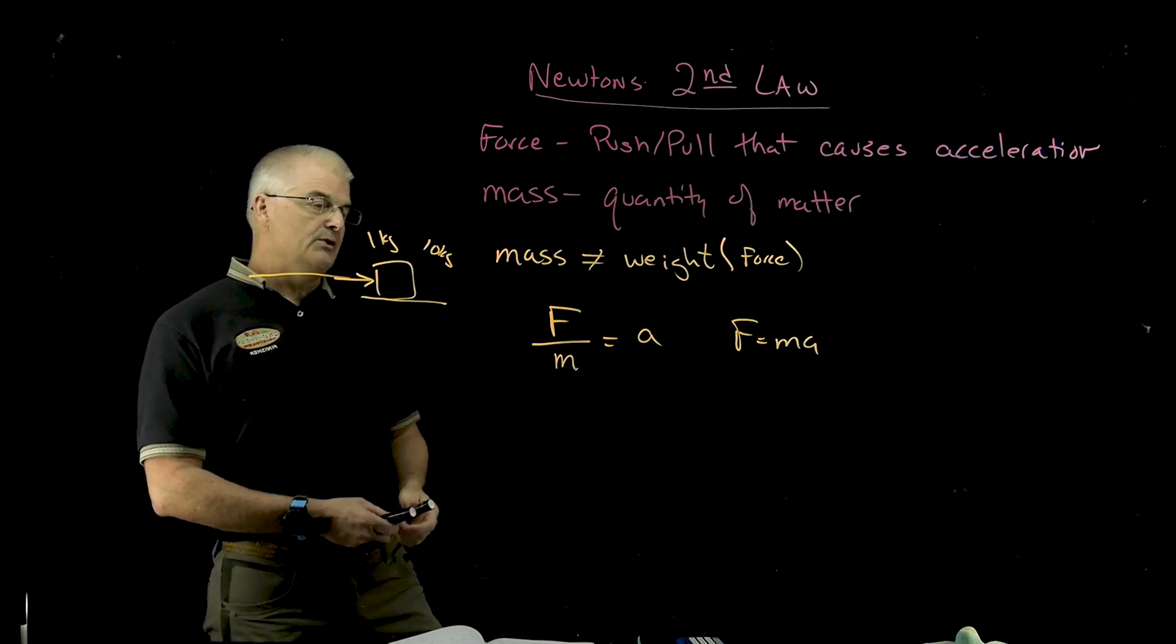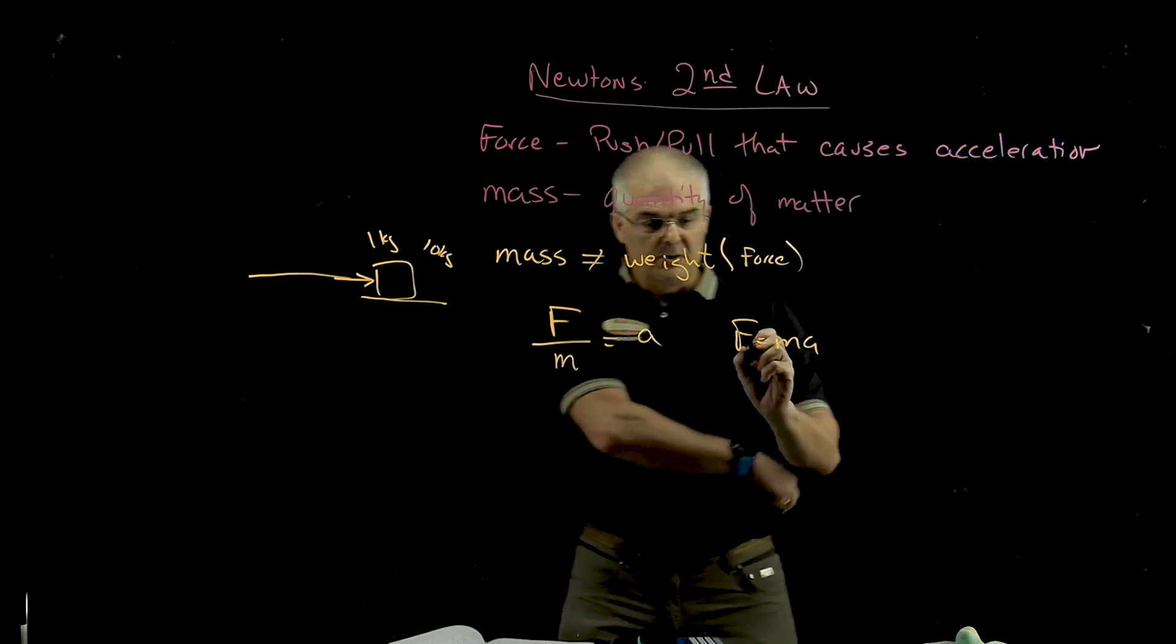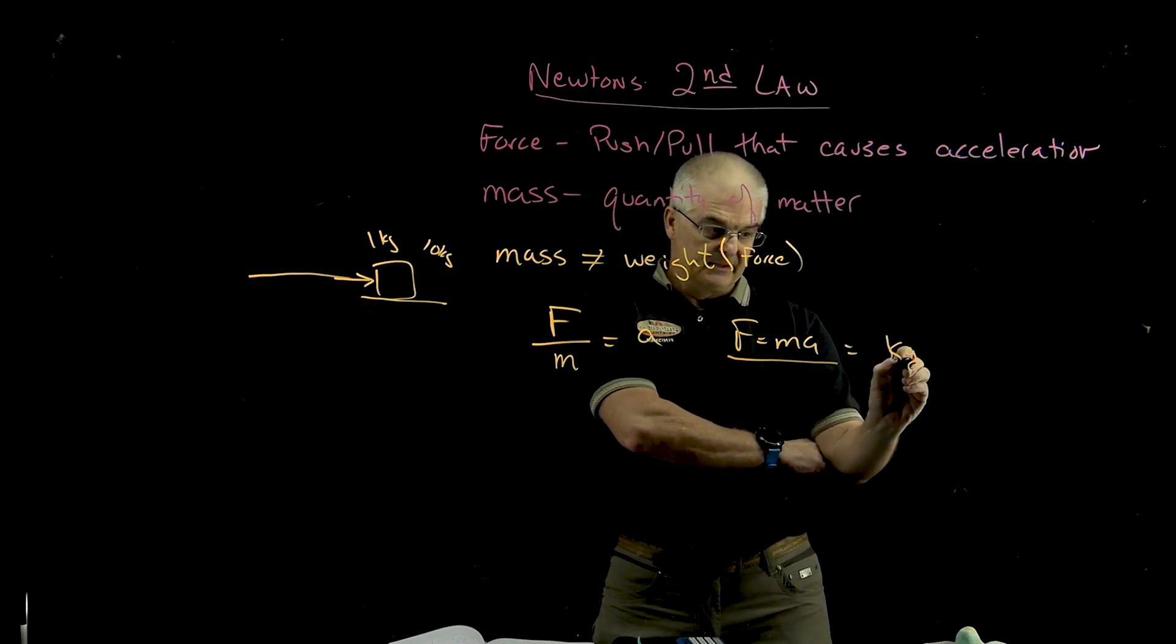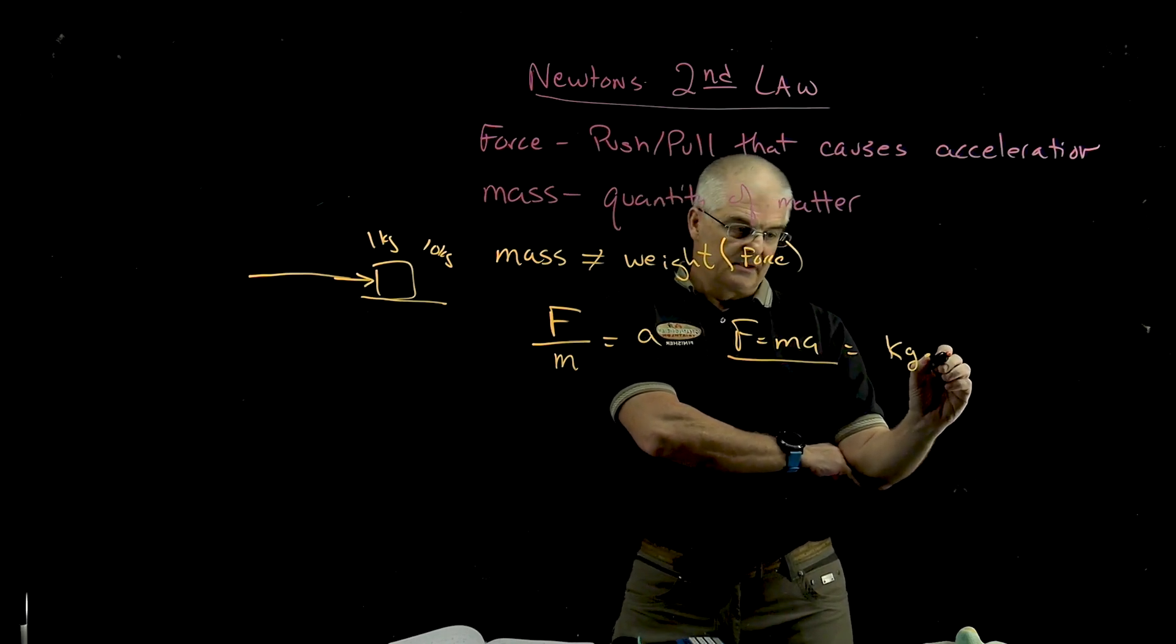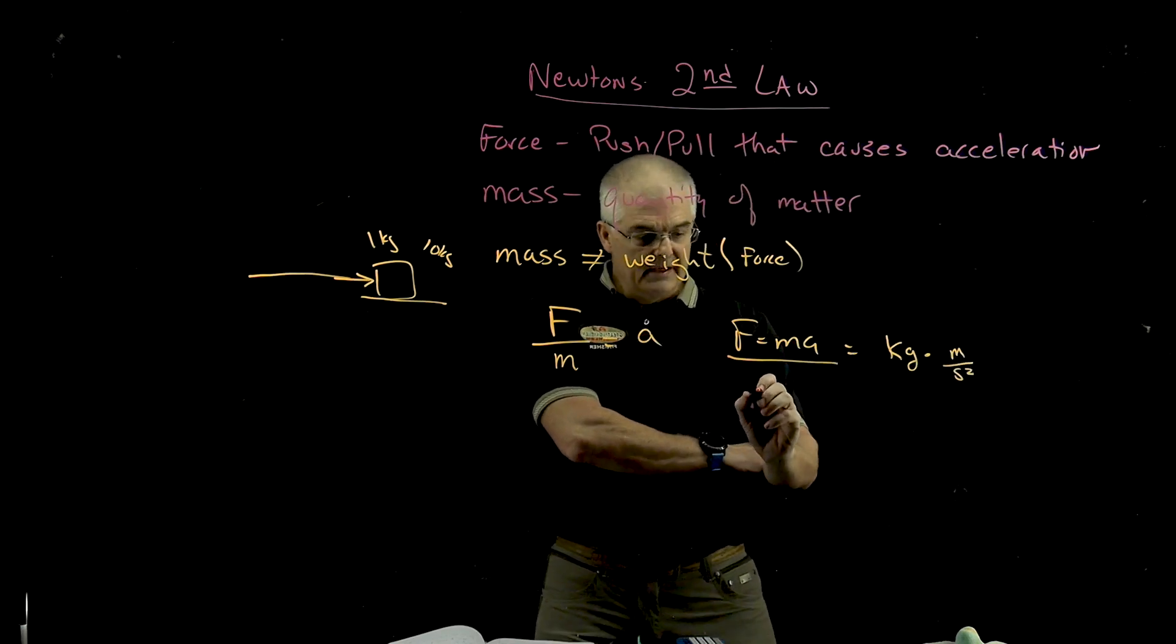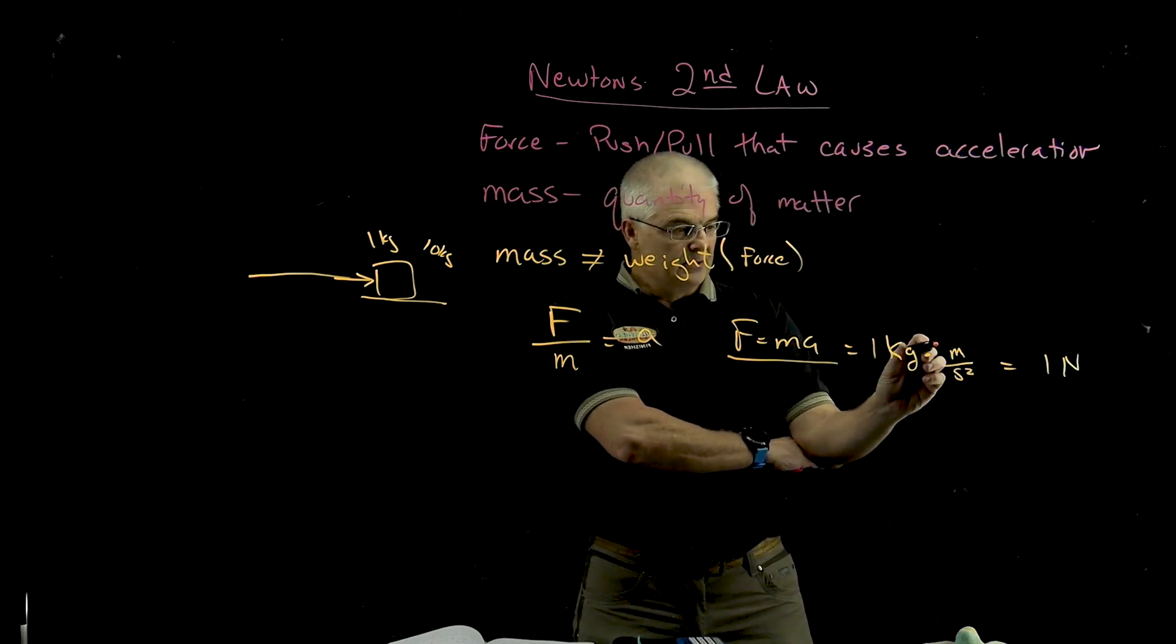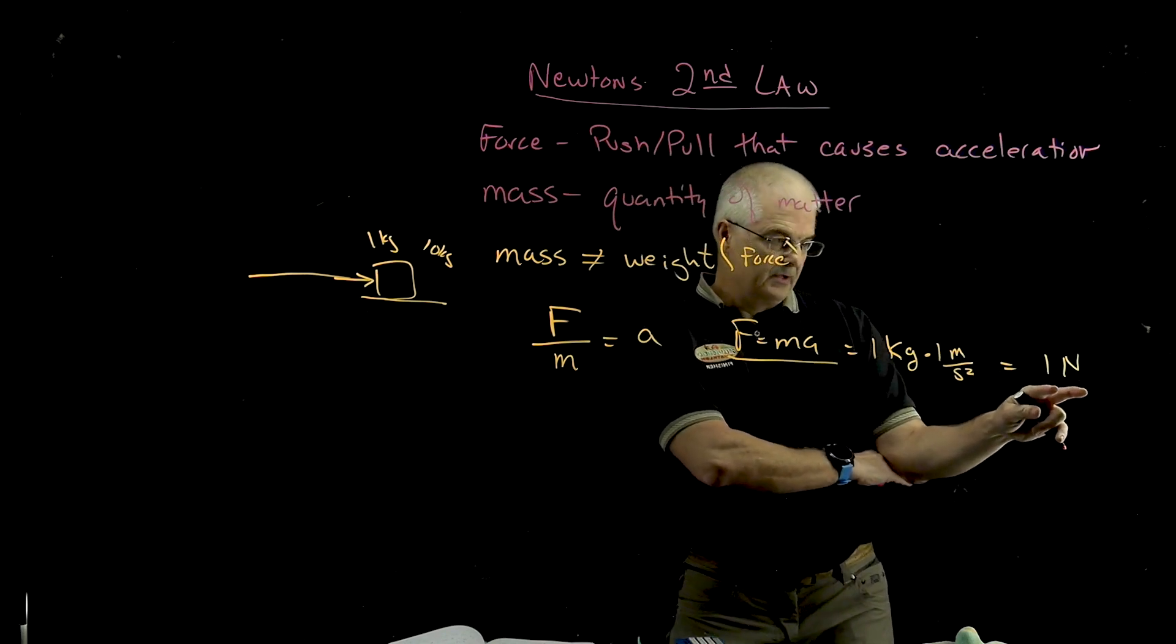Now, what are the units on Newtons? We've said the unit on force is a Newton, and it is, but let's think about it for a moment. If this is the equation, F equals MA, the unit for M is a kilogram. And A, we've learned in previous classes, is acceleration, and that's in meters per second squared. So one Newton equals one kilogram times one meter per second squared. So one Newton is if you had one kilogram, and you accelerated it one meter per second squared.